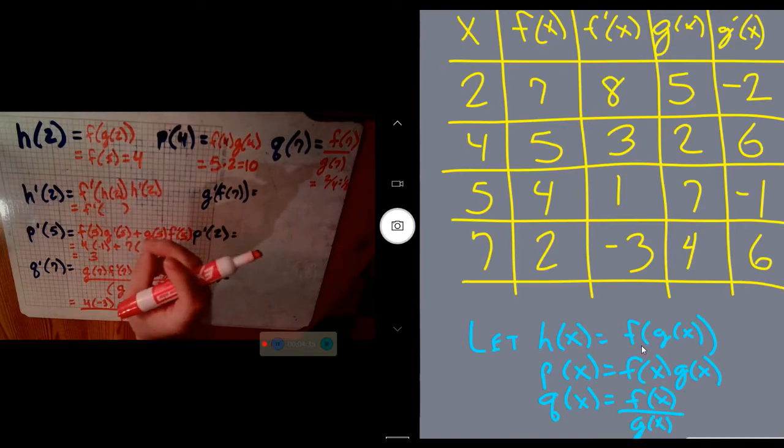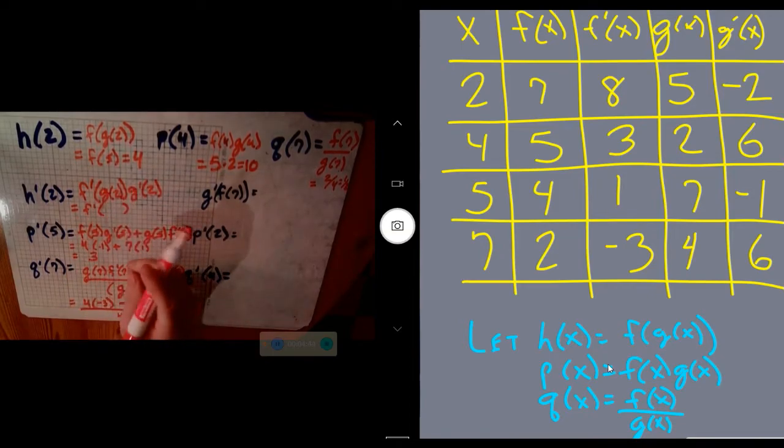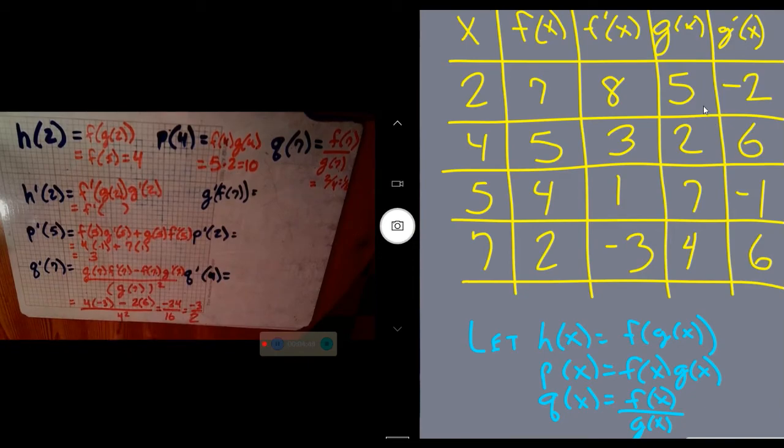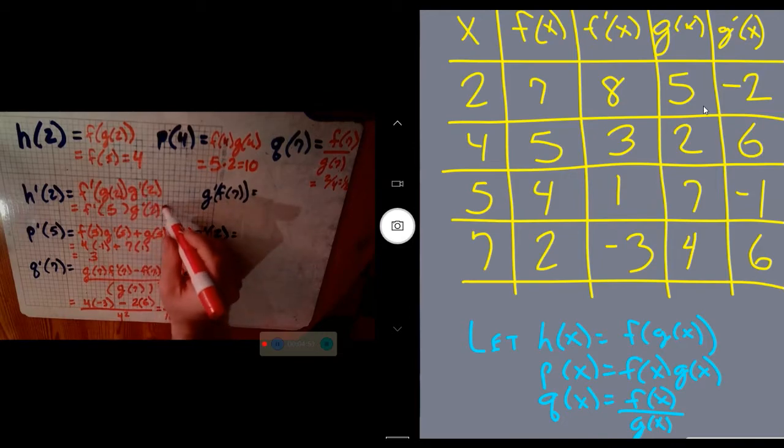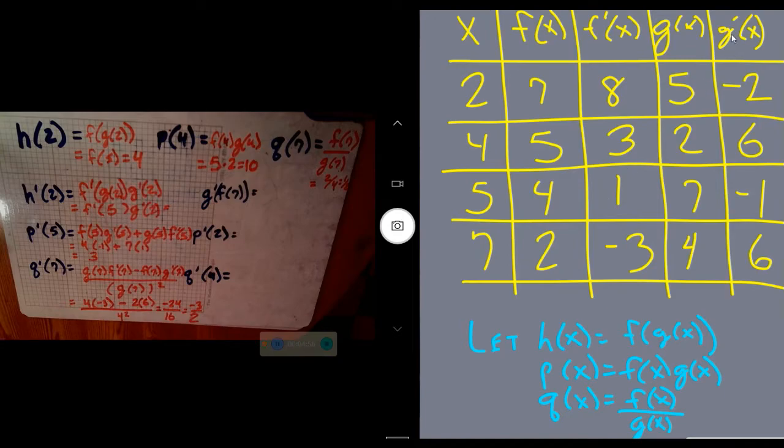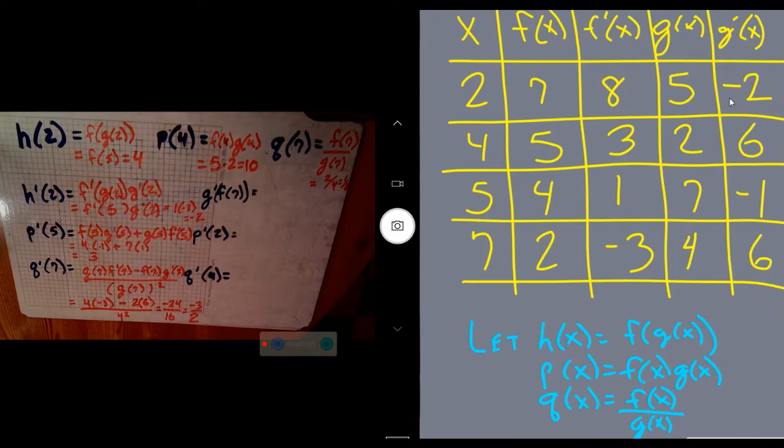So f'(h(2)). What is h(2)? Hang on, h is not the inside function. I apologize. g is the inside function. What is g(2)? g(2) is 5. So I'm doing f'(5) times g'(2). f'(5) is 1, and g'(2) is -2. So 1 times -2, which is -2 for my answer.